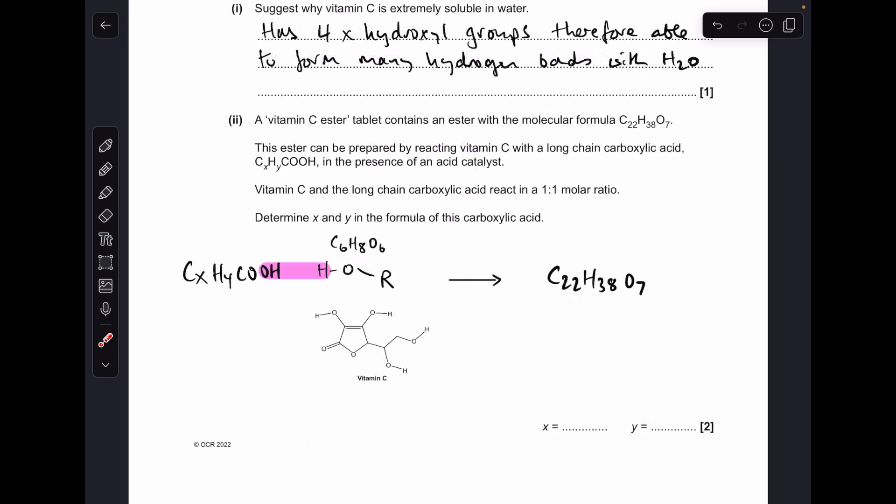Moving on to the next part, I thought this was a little bit tricky, so I'll try to explain it in a fairly simple way. Vitamin C, I'm representing as HOR—HO and then that's the R group there. We know the molecular formula is C6H8O6.